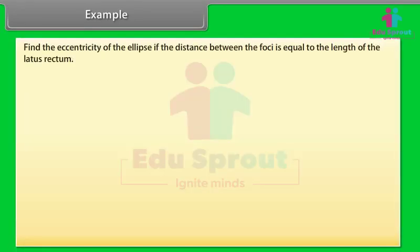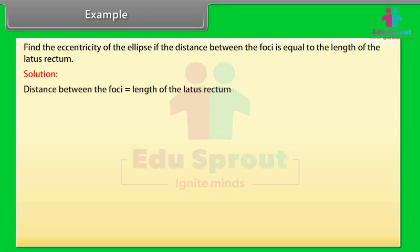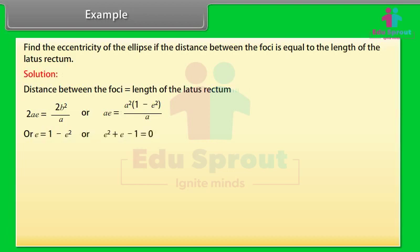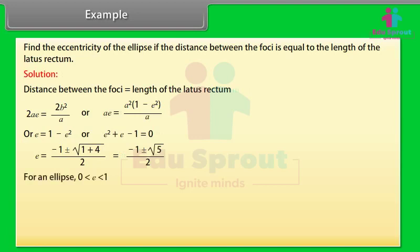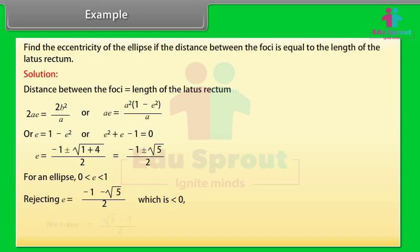Example: Find the eccentricity of the ellipse if the distance between the foci is equal to the length of the latus rectum. Solution: Distance between the foci = length of the latus rectum gives 2ae = 2b²/a, so ae = a²(1 − e²)/a, thus e = 1 − e², giving e² + e − 1 = 0. Solving: e = (−1 ± √5) / 2. For an ellipse, 0 < e < 1, so rejecting e = (−1 − √5)/2 < 0, we have e = (√5 − 1) / 2.